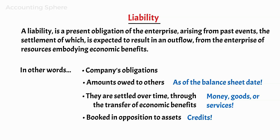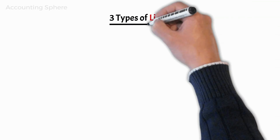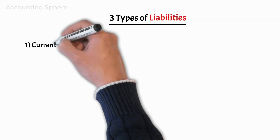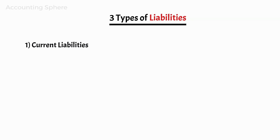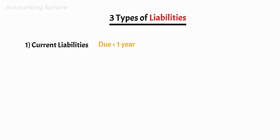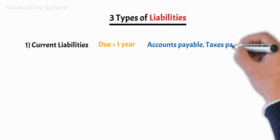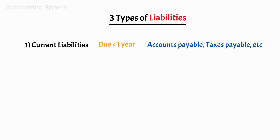Liabilities are a vital aspect of a company because they are used to finance operations and pay for large expansions. We can distinguish three types of liabilities. One: current liabilities, which are a company's short-term financial obligations that are due within one year, for example accounts payable and taxes payable.